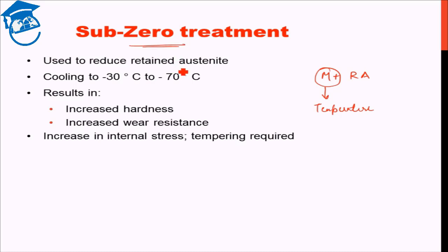Subzero temperature treatment exactly exploits that idea. It basically takes the material to very, very low temperature to as low as minus 30 degrees Celsius to minus 70 degrees Celsius. As a result of that, what happens is the amount of retained austenite that remains in the body is very less and maximum amount of the material is converted to martensite.